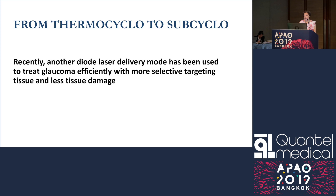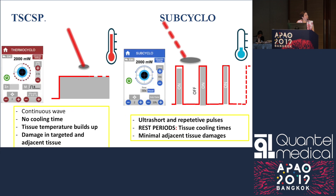Recently, another laser — the SubCyclo — has been used to treat glaucoma efficiently, with more selective targeting of tissue and less tissue damage. In contrast to the conventional thermo-laser, which delivers a continuous high-intensity energy, SubCyclo delivers ultra-short and repetitive pulses on the order of microseconds, corresponding to a time-on followed by a long cooling time corresponding to time-off. This allows the energy to cool down between pulses and avoids any coagulative necrosis in the tissue.